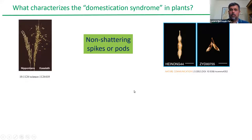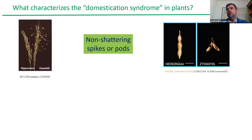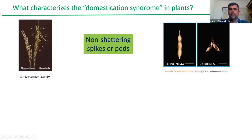Although in the case of animals you can say, well, all of them are mammals, here we are comparing a grass with a legume and you have the same kind of trait, because this trait is fundamental for domestication. If you don't have seed dispersion, you will be able to harvest the seeds. And if you are able to harvest the seeds, these will be the seeds that go to the next generation. So it's a kind of automatic selection, although some authors call this unconscious selection.